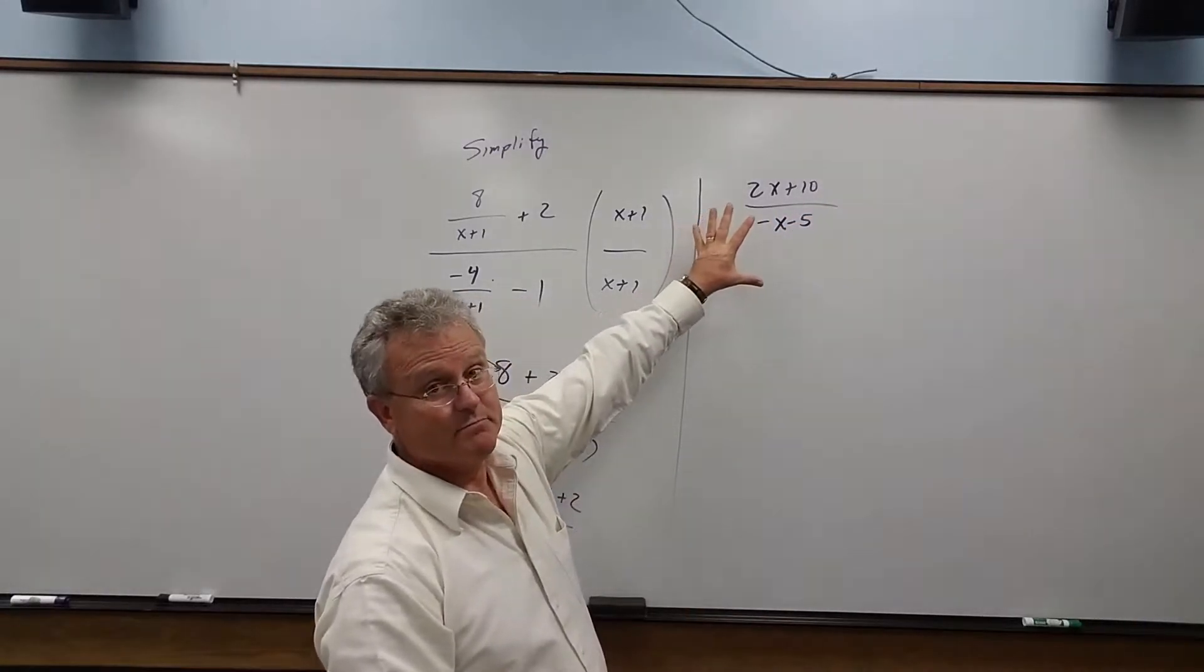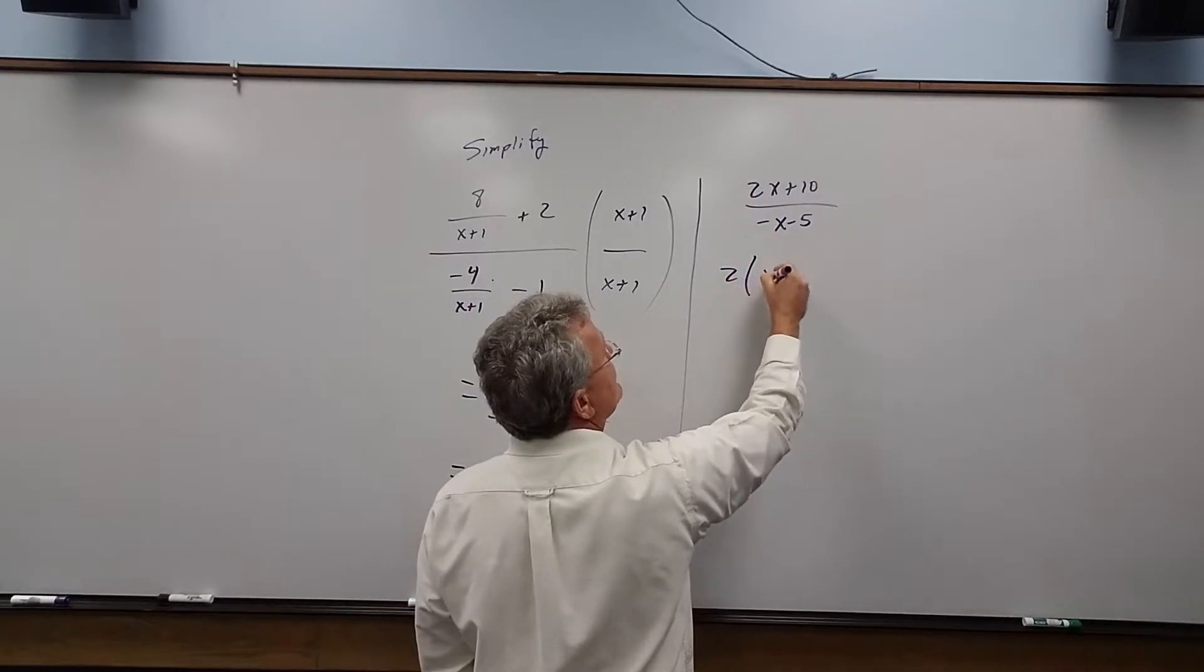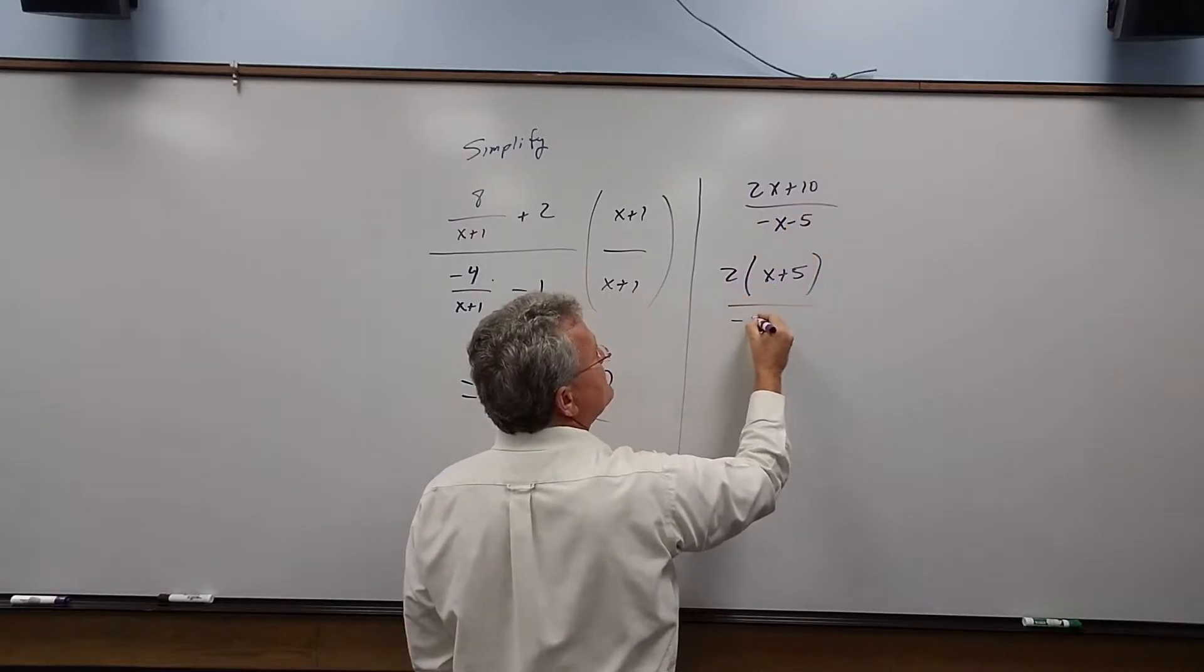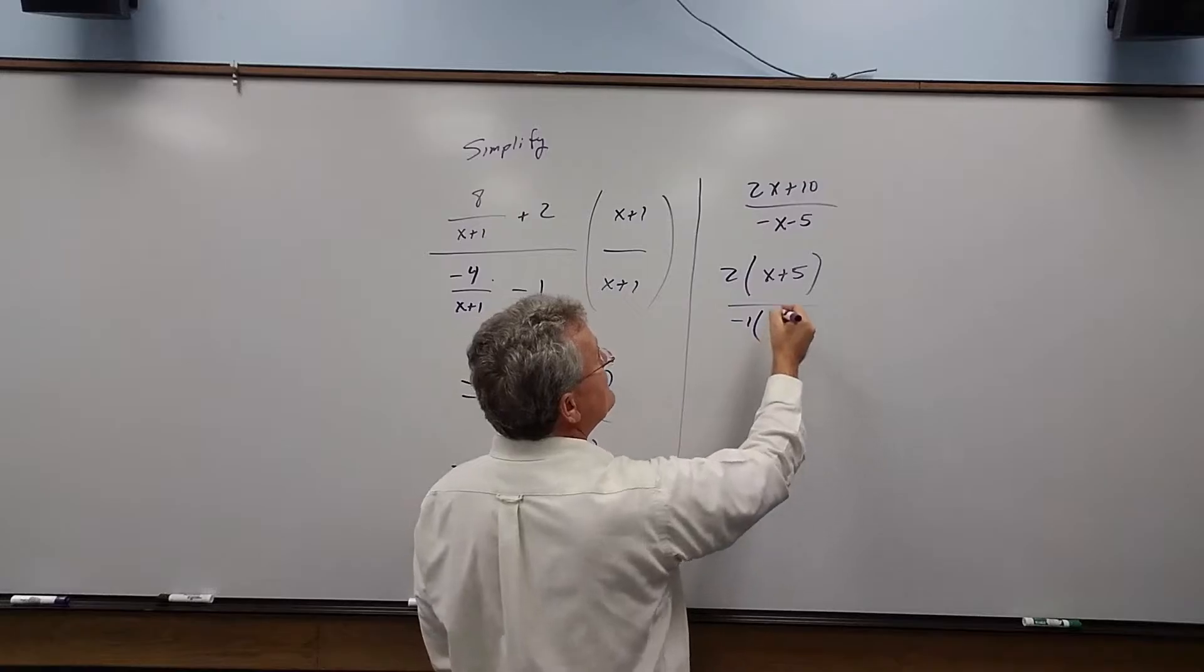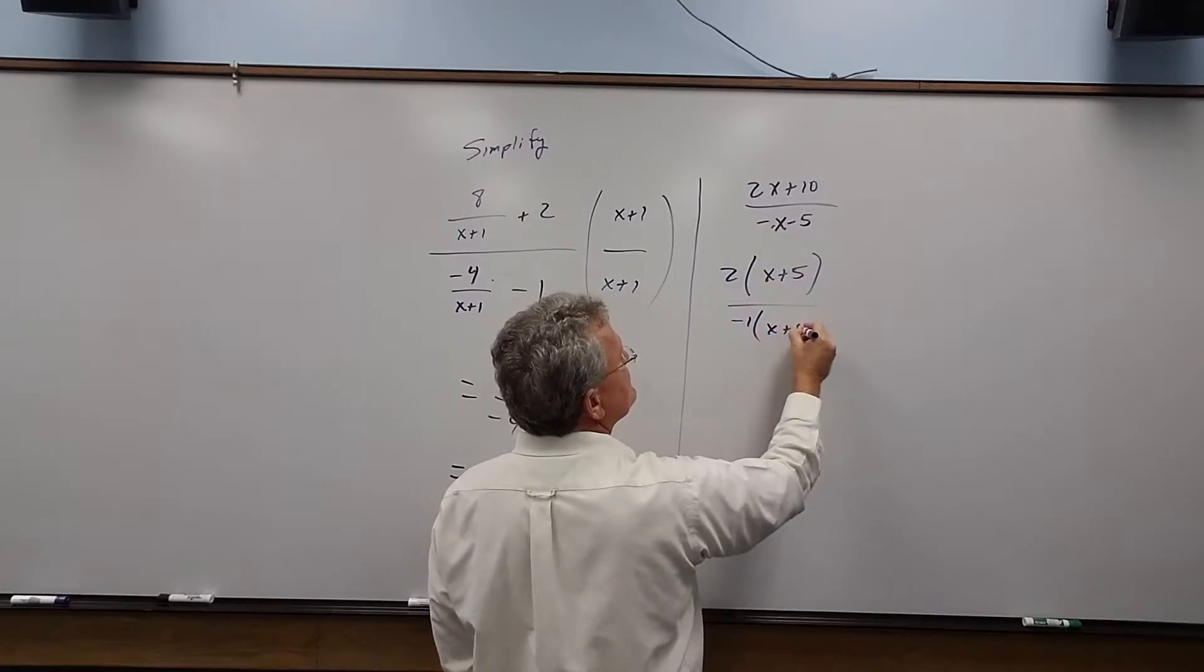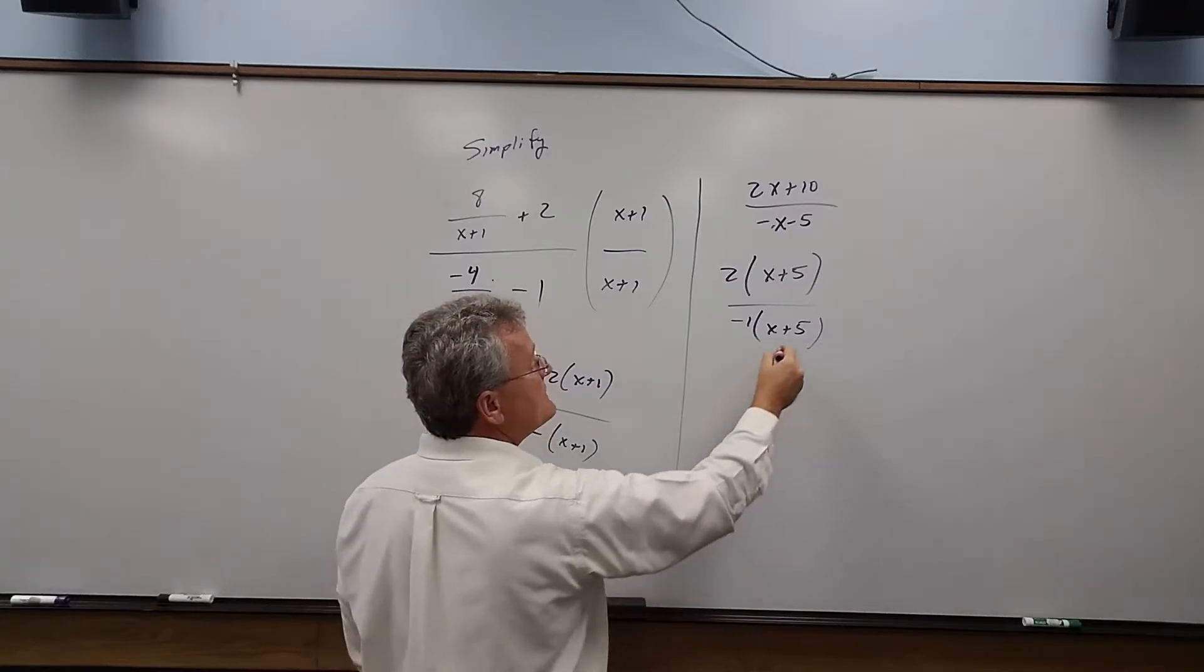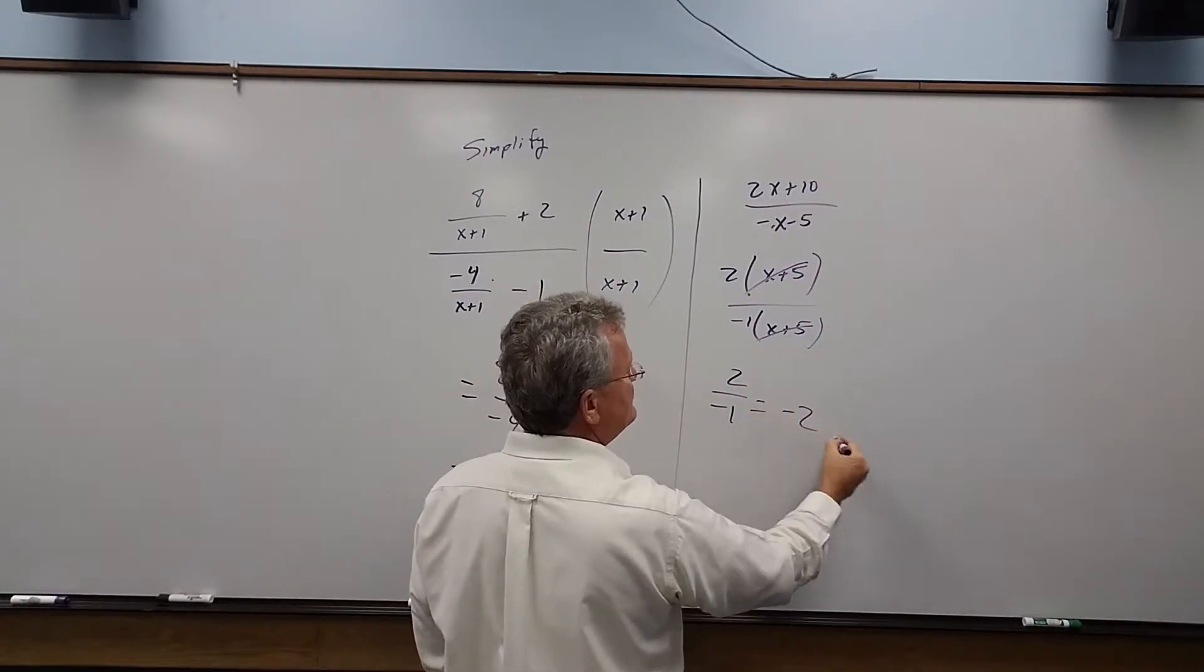Now we can simplify further. When I factor out a 2, I'm left with x plus 5. When I factor out a negative, let me write negative 1, I'm left with x plus 5. Now the x plus 5's cancel, and we get 2 over negative 1, which is negative 2.